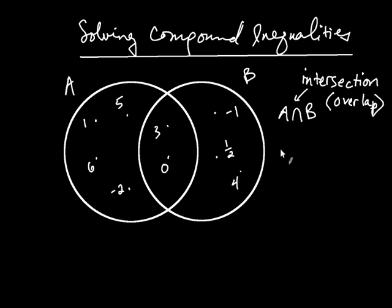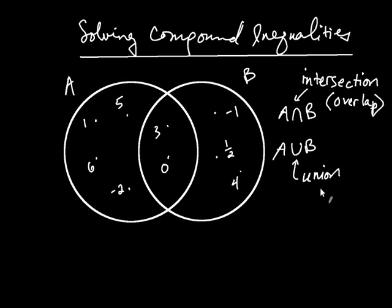There's another way called union, denoted A union B. When you see that symbol, that's called union in math. All you have to know is it basically means all — all of the members belonging to A or B. Up here, intersection is the overlap of sets A and B.